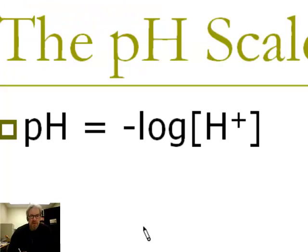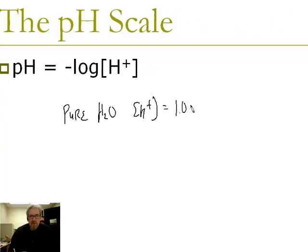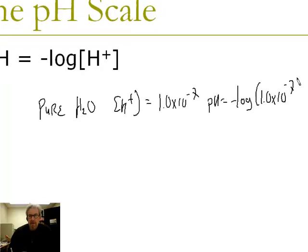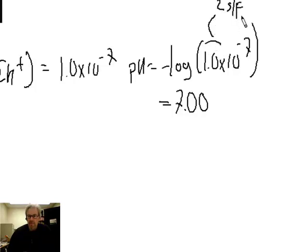If pH is the negative logarithm of H⁺ concentration, then in pure water — where [H⁺] = 1.0 × 10⁻⁷ — the pH equals the negative base-10 log of 1.0 × 10⁻⁷. The log of 10⁻⁷ is −7, and the opposite of that is 7, recorded as 7.00. Here's a significant figures tip: when you take the log of a number, the number of significant figures in the original number equals the number of decimal places in the log. So 1.0 (two sig figs) gives 7.00 (two decimal places).